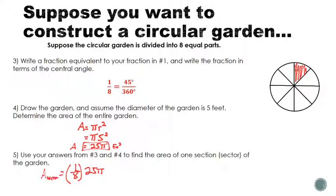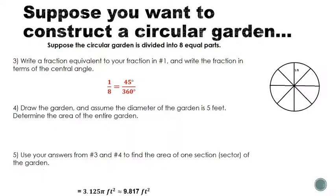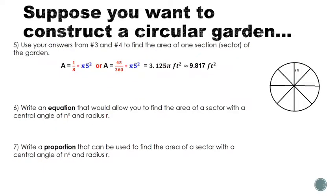Instead of using one over eight, we write it in terms of degrees, because the central angle of 45 degrees is the equivalent fraction. Multiplying that fraction times the whole area gives us our answer. Doing those calculations, you get 3.125 pi, or roughly 9.817 square feet.